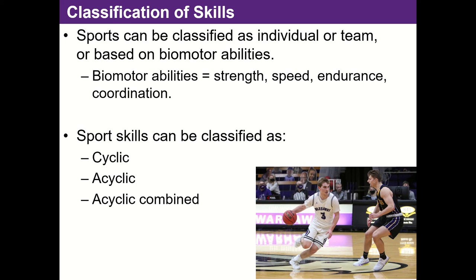In terms of classification of sports skills, they can be cyclic. Examples of cyclic skills include running, cycling, rowing, and swimming. In a cyclic skill there is an obvious cycle. In the case of running, there are two big parts to gait: the stance phase and the swing phase. During running, you just alternate between stance and swing, back and forth — that's a cyclic skill.